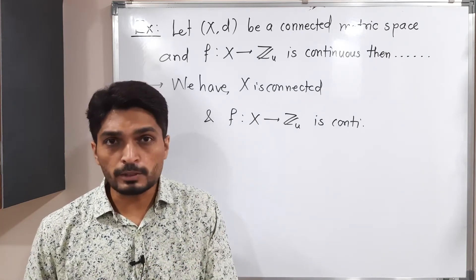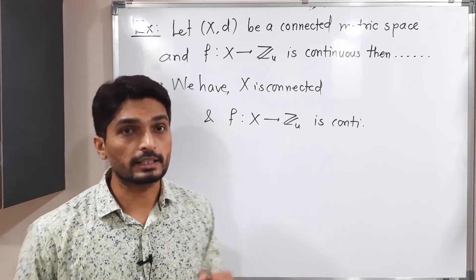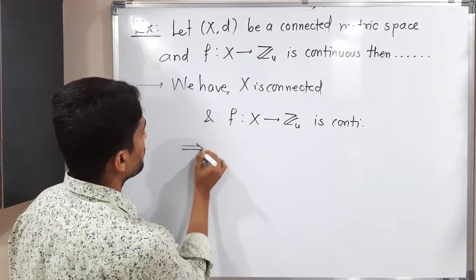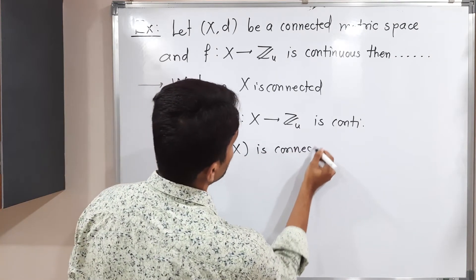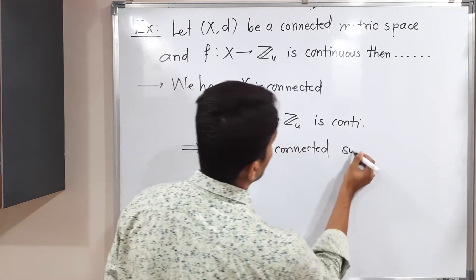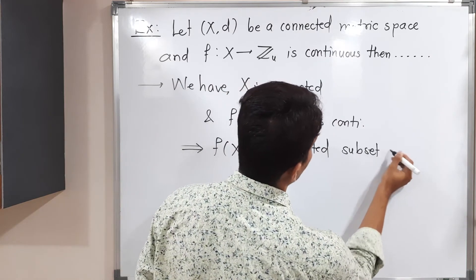We know that continuous image of connected set is connected. So that is why we can write here implies f of X is connected subset of Z.